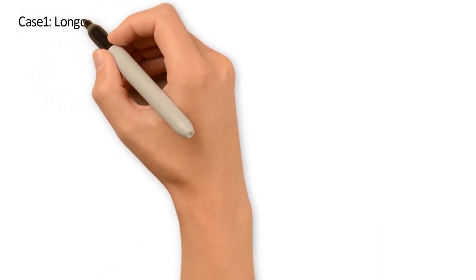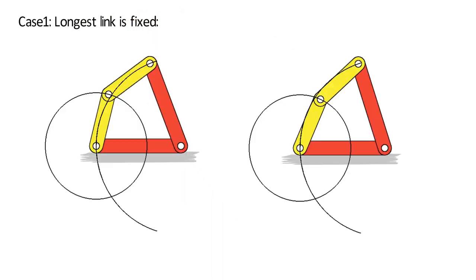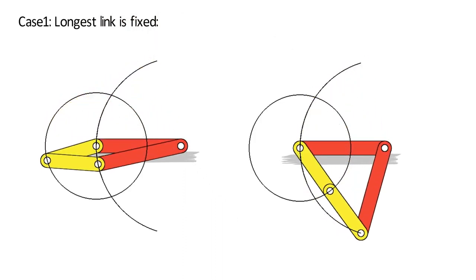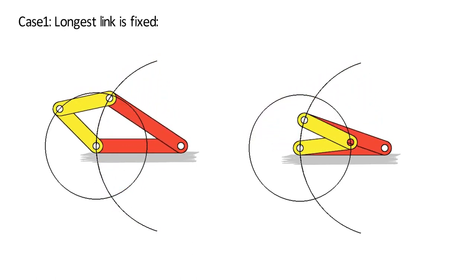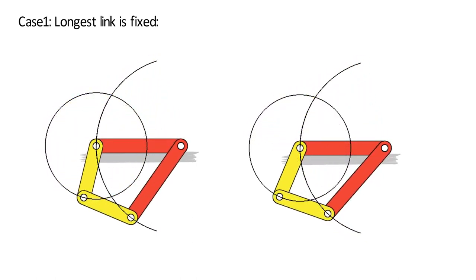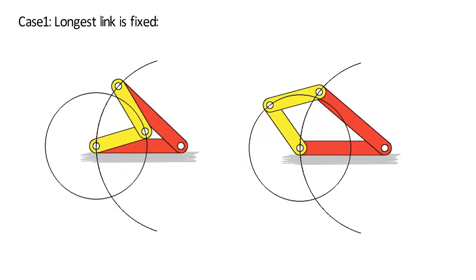Case 1: The longest link is fixed. The mechanisms so obtained are two crank-rocker mechanisms. Both mechanisms differ in the sense of rotation of the crank, even though the rocker links oscillate in the same manner.